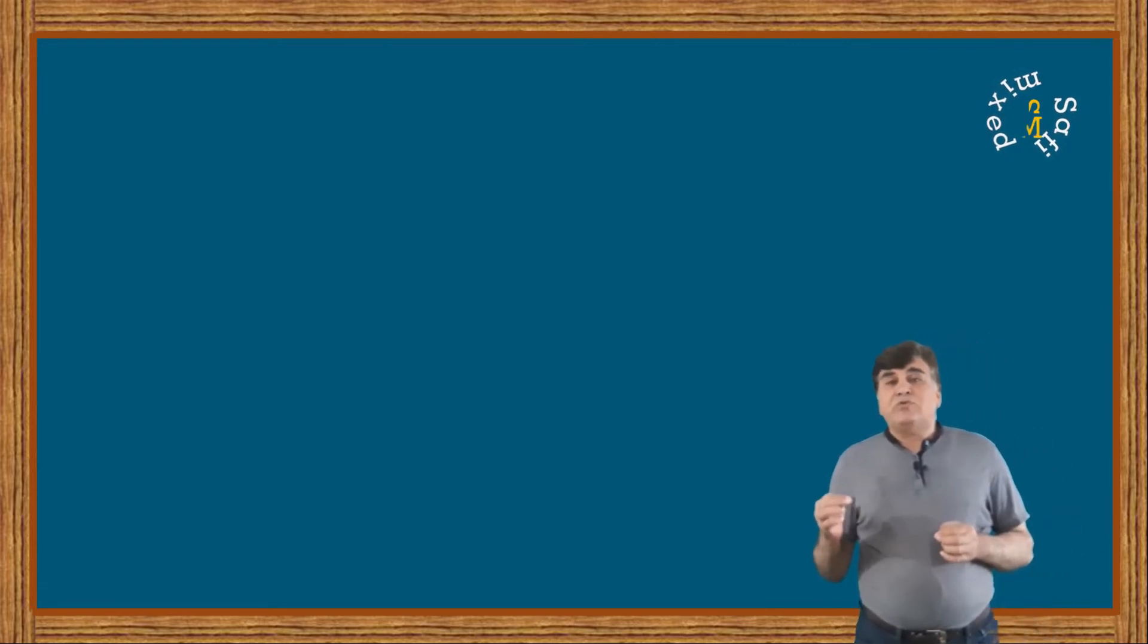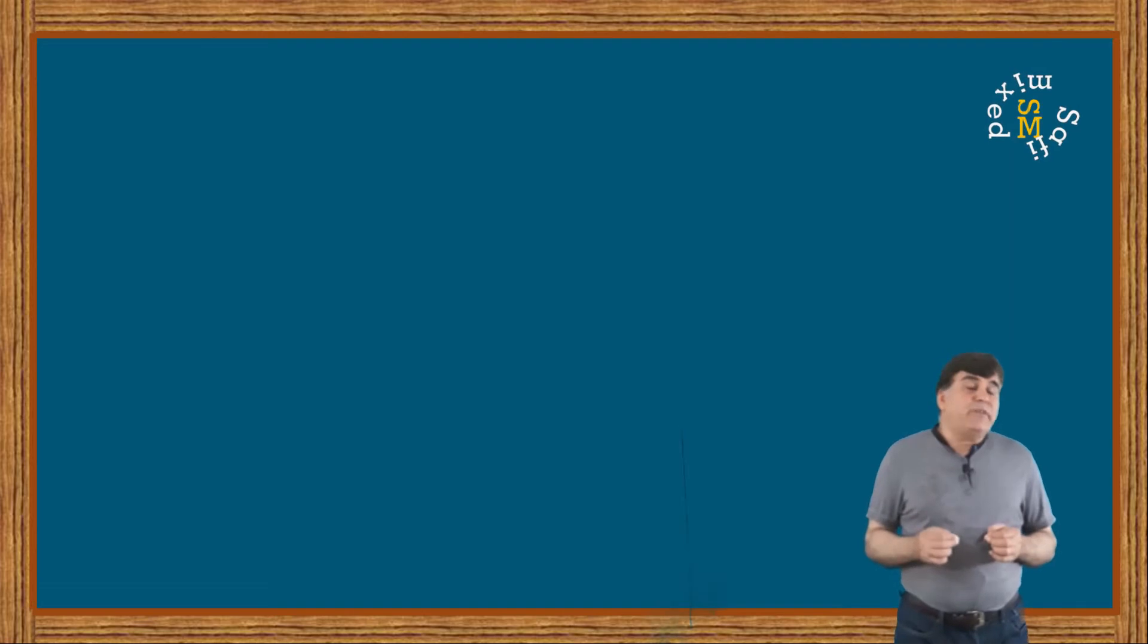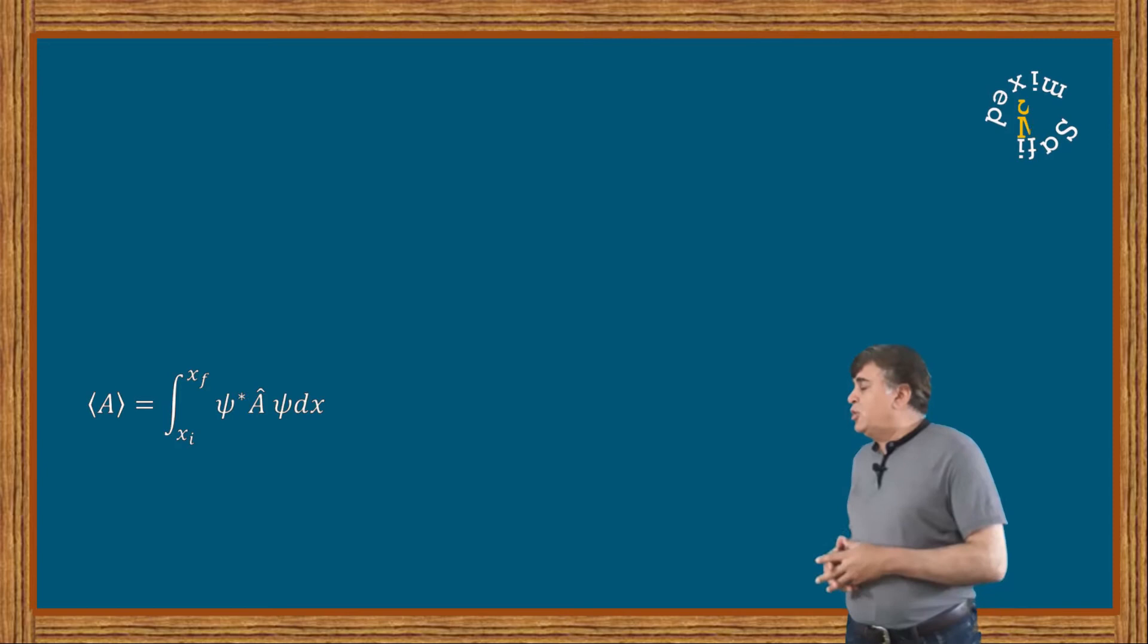We know from our previous two videos on expectation values that the expectation value of an operator A can be written in the form of this equation where we have just the operator in the integrand.